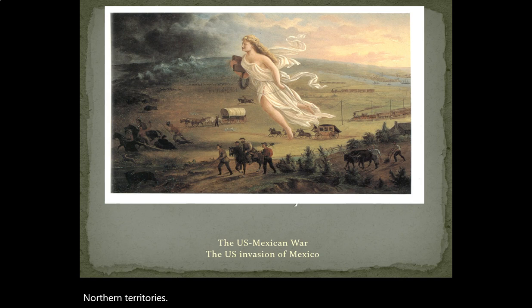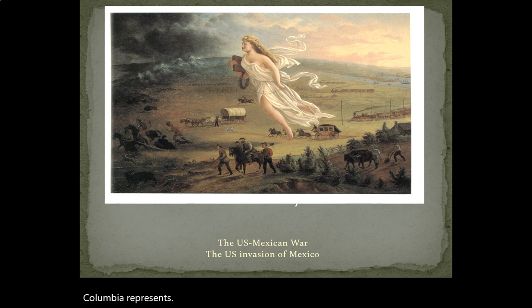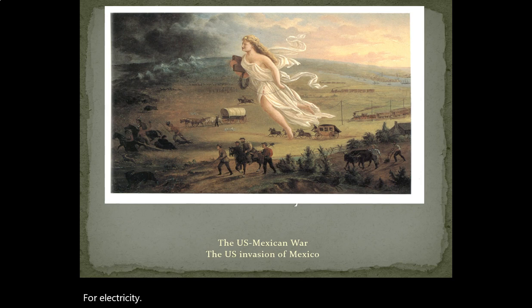The image you are looking at shows the character of Columbia. Columbia represents Manifest Destiny. She wears a star on her forehead. She carries a book in her right hand that represents education and knowledge. And she's holding the cables for electricity and a telegraph flying in her hand. If you observe this image, you can see a contrast between darkness and light.